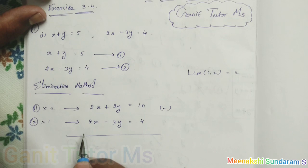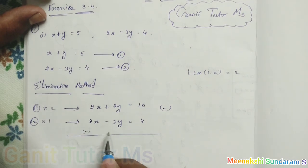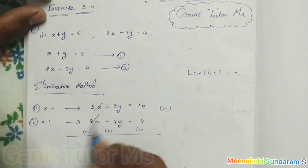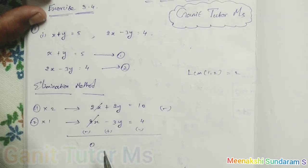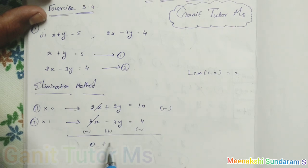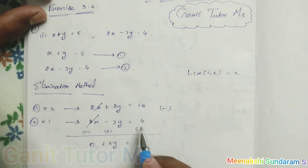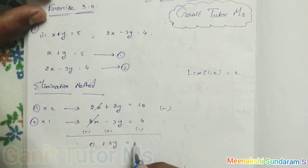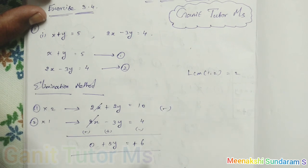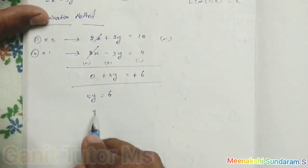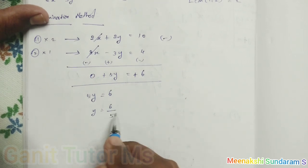In the subtraction, I simply change the sign. So minus 2x plus 2x — it is removed, that is 0x. Next, plus 2y and plus 3y gives plus 5y. On the right side, 10 minus 4 gives 6, with the sign change applied. So 5y equals 6, therefore y equals 6 by 5.